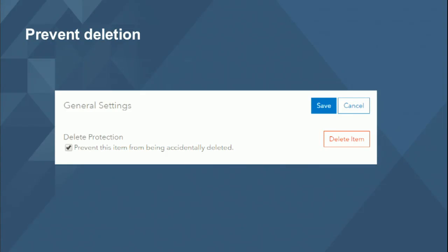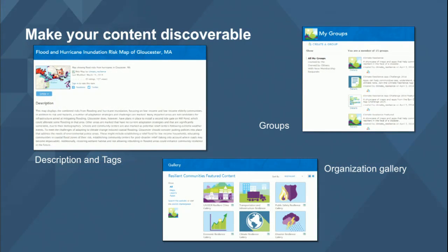Another thing you might want to do is prevent deletion — we've all been there wondering where the undo button is. If you delete something, especially something that's not yours, that can cause a lot of problems. There's a setting to prevent that. Also, make your content discoverable by embedding it in groups, adding the really good stuff to your organizational galleries, and putting it front and center for people to discover. Maybe that department has certain data layers they use daily — make those available front and center using a group.